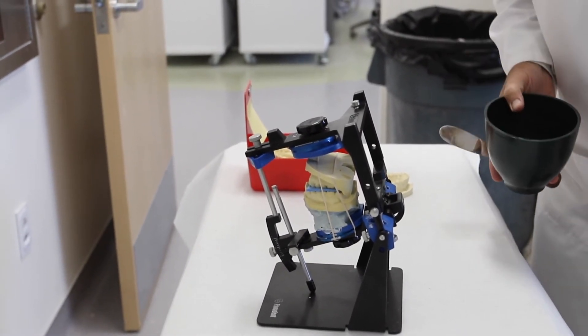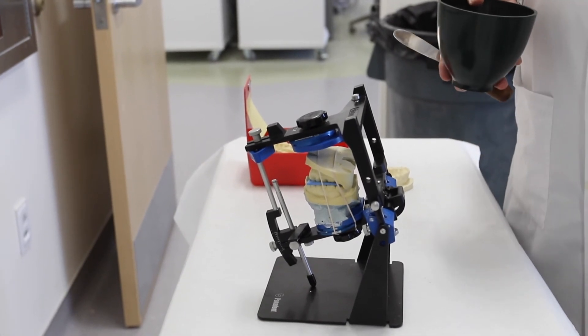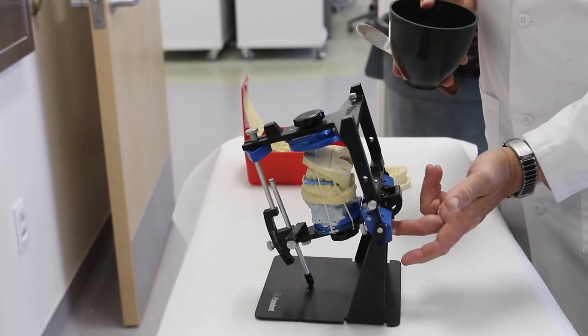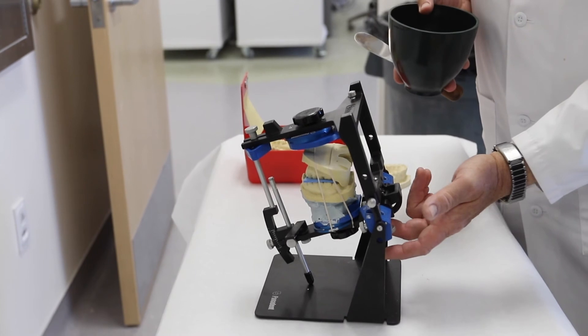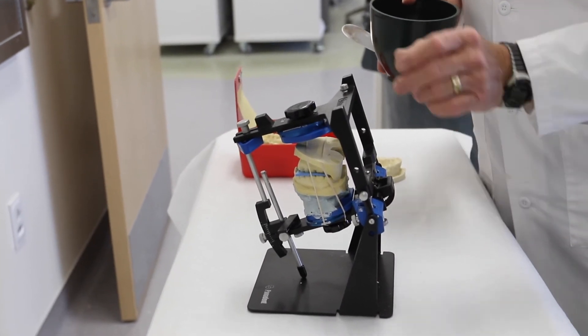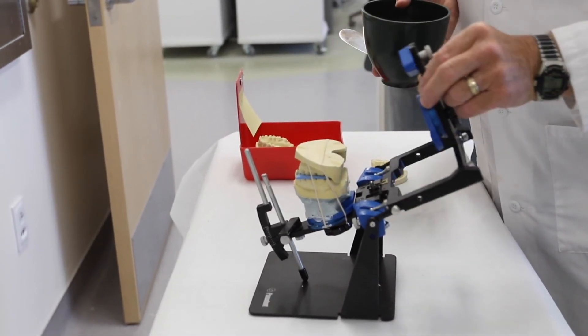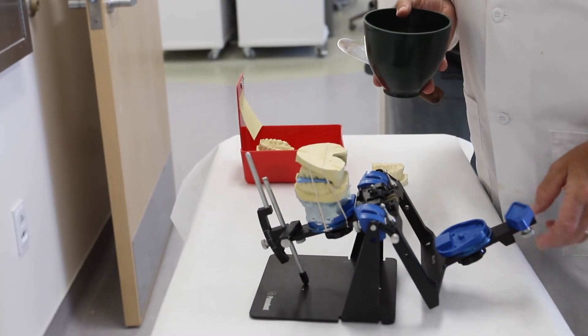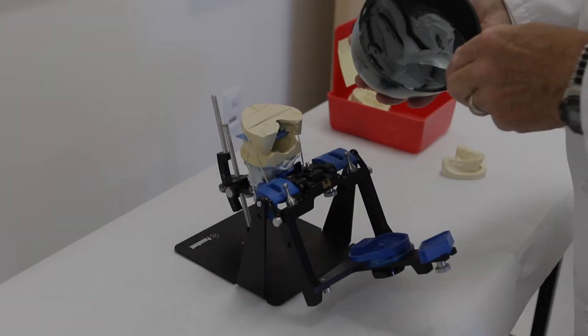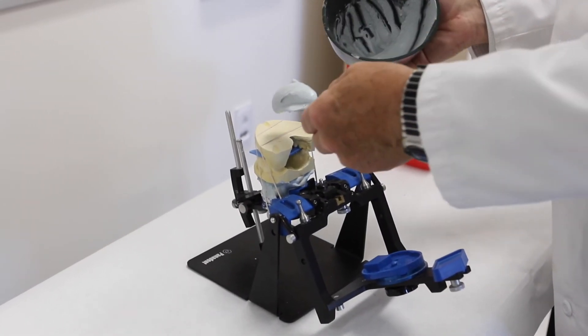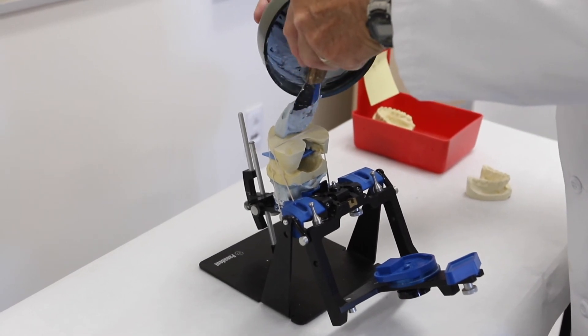It's also important when you're doing the lower mounting, since it is a centric mounting, to make sure that your centric lock pin on the articulator is engaged and you're working in the hinge axis of the articulator for this mounting. Now that you've mixed your mounting stone, place it in position.